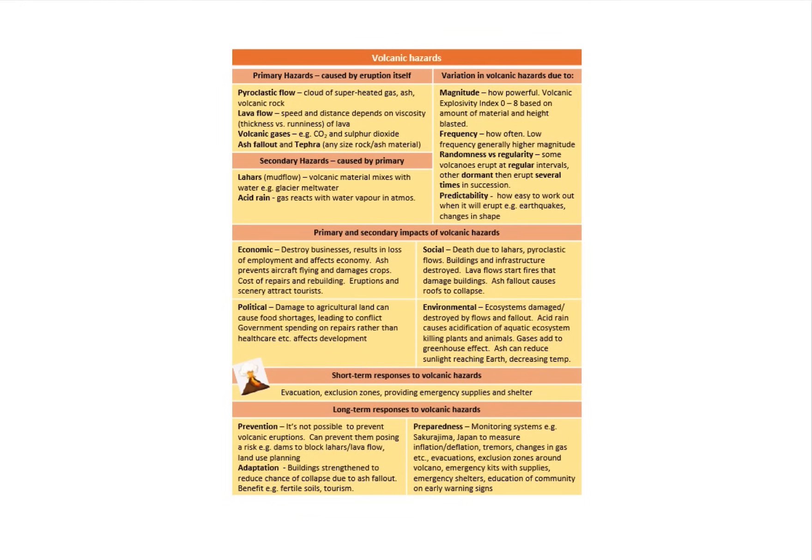If I start to think about breaking these down a little bit, I might group them even further and go economic, political, social and environmental. You start to think about the way in which I classify my hazards. I might see some variation in hazards—magnitude, the frequency, the randomness, predictability. That's all going to have an impact on how I group these impacts.